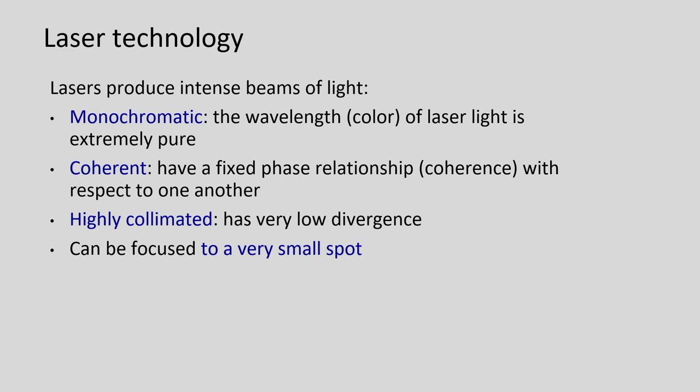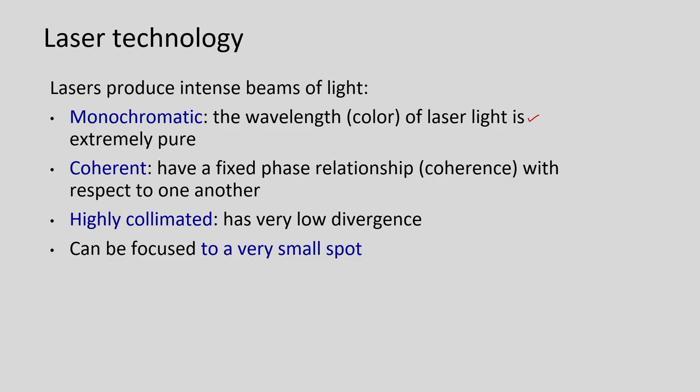All the lights in the laser beam have the same wavelength — that is the meaning of the monochromatic characteristic. The second characteristic is that lasers are coherent in nature. Coherence is a very important property that represents the phase relationship between the laser waves or light energy waves. All the laser beams or energy waves inside the laser beam have a fixed phase relationship — they are all in the same phase. The third characteristic is that the laser beam is highly collimated, meaning the waves in the laser beam are parallel to each other.